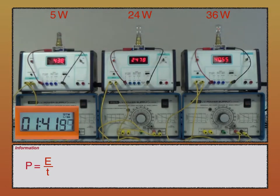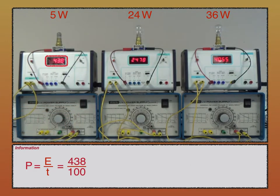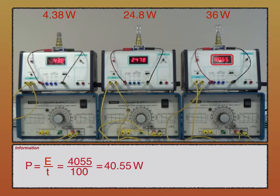Using the equation then, the first lamp actually has a power of 438 divided by 100, which is 4.38 watts. The second lamp has a power of 2478 divided by 100, which is 24.78 or 24.8 watts to three significant figures. And the third has a power of 4055 divided by 100, which is 40.55 or 40.6 watts to three significant figures.